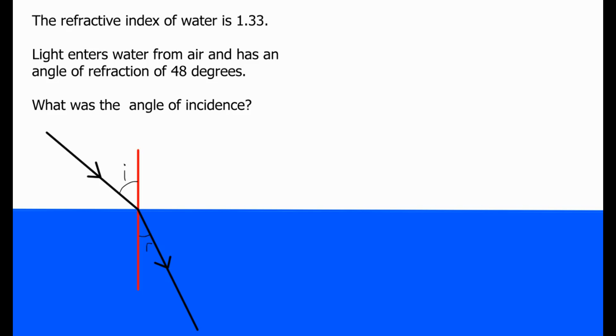And here's another type of question. This one tells us that the refractive index of water is 1.33. Light enters water from air and has an angle of refraction of 48 degrees. What was the angle of incidence? So they've given us the angle of refraction. We're trying to find out what the angle of incidence must be.